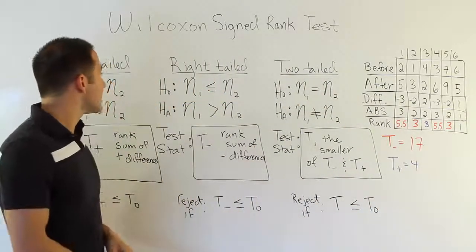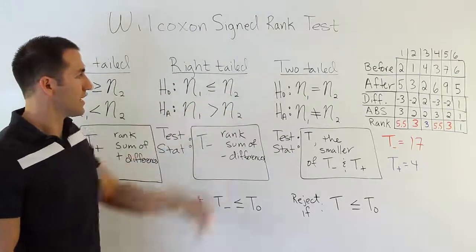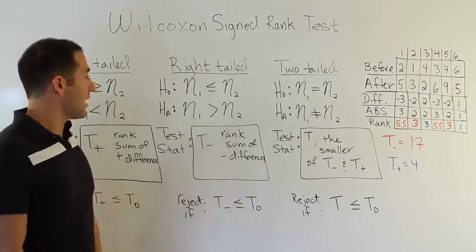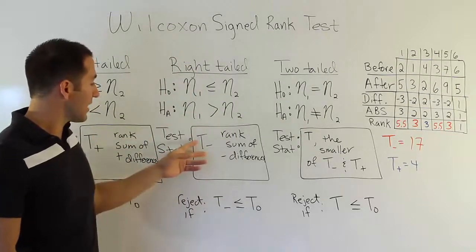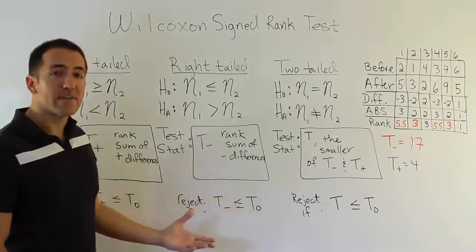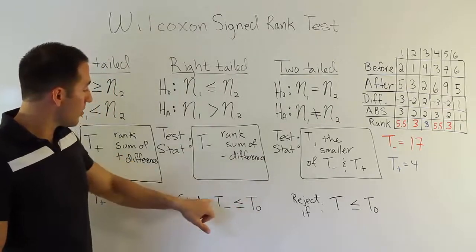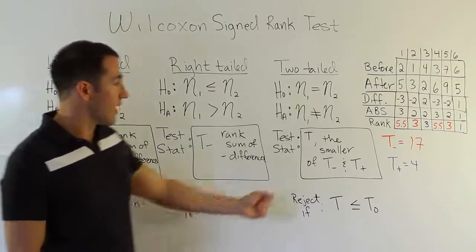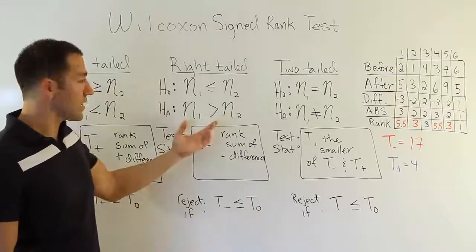In the right-tail test, we're making the argument that the before is larger than the after — which in this context would mean the workout routine is actually detrimental, meaning students do fewer pull-ups. In that case, T negative becomes your test stat. We're always looking for it to be small against the critical value. If T negative is less than the critical value, we reject H0 and support HA. These critical values are always based on your significance level and your sample size, which we'll see in the problem videos.